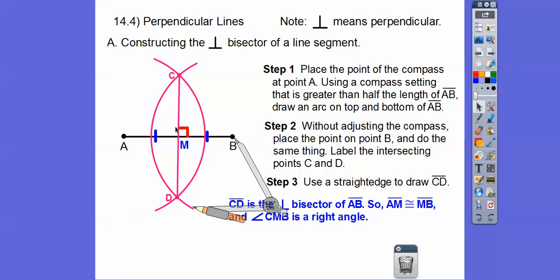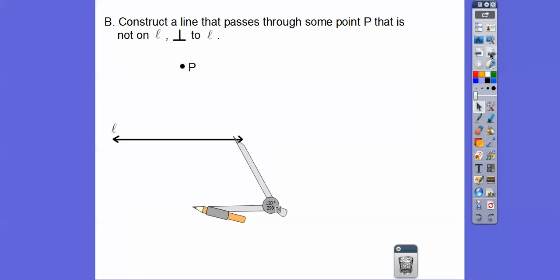Perpendicular means it makes a right angle, and it bisects the segment. So the length of AM is going to be congruent to the length of MB. We've created a perpendicular bisector of that segment — that's how we do that. So if we wanted to create a right angle, that's how we do it.